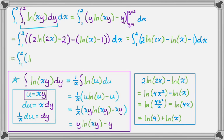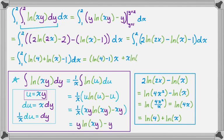Now integrate from 1 to 2: ln(4) + ln(x) minus 1 dx. Group the constant terms: ln(4) minus 1 integrates to (ln(4) minus 1)·x. The antiderivative of ln(x) is x·ln(x) minus x, which is important to know for this problem. So the full antiderivative is (ln(4) minus 1)·x plus x·ln(x) minus x, evaluated from 1 to 2.